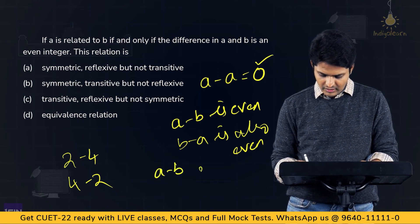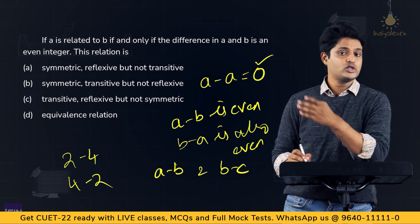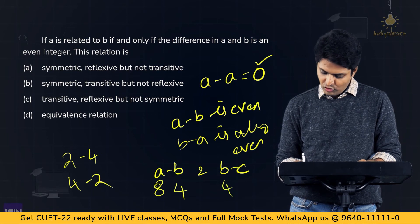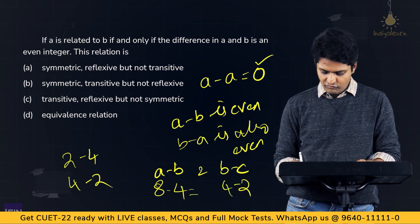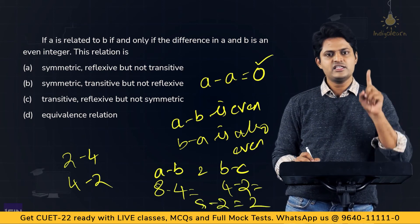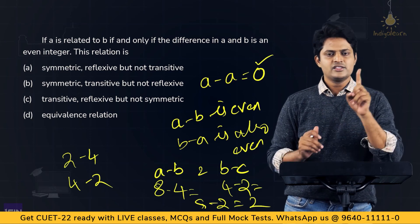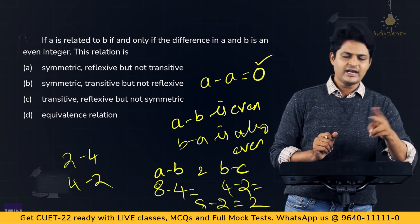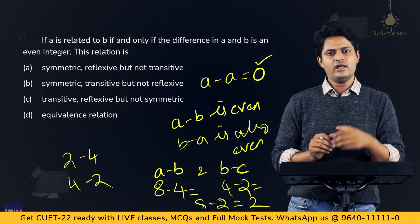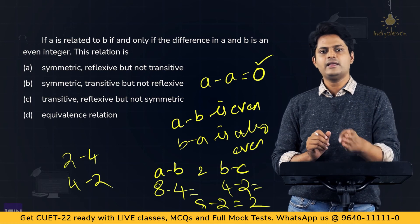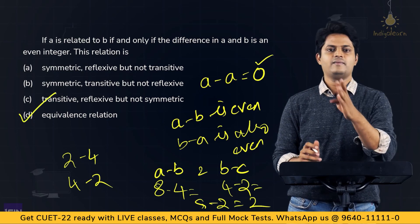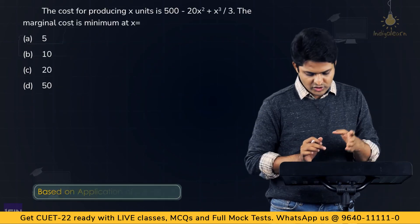Transitive: if A minus B is even and B minus C is even, then A minus C is also even. For example: 8 minus 4 is even, 4 minus 2 is even, so 8 minus 2 is also even. Since it is reflexive, symmetric, and transitive — all three together — this is an equivalence relation, which is option D.